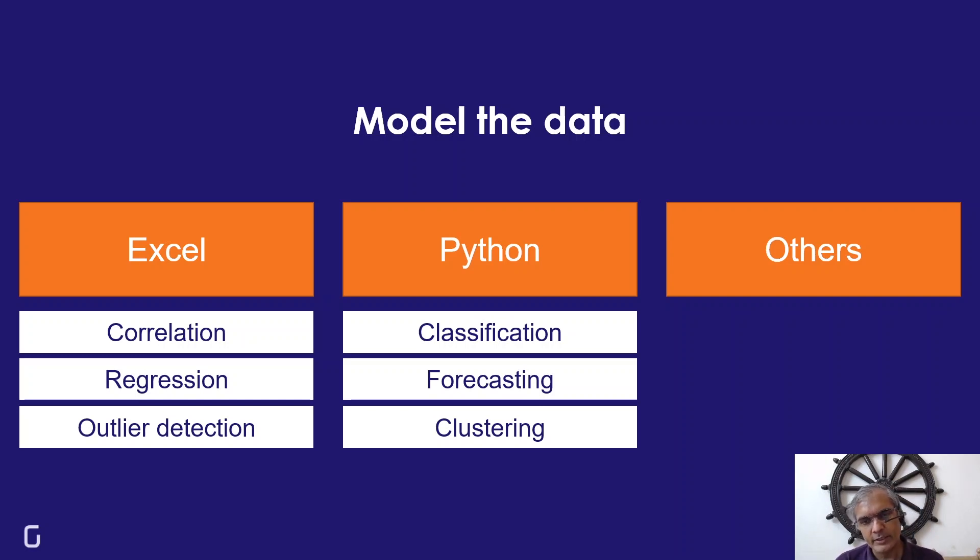A classification algorithm can look at that history of data and say, looking at the profile of this person, I would put them in the 'give the loan' bucket or put her in the 'don't give the loan' bucket.